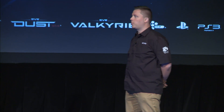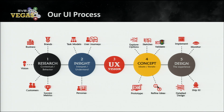When we're doing UI, we have a process. We start with research, where we get all the information we need to base our decisions: what are the customers asking, what are the metrics telling us, what is the overall vision, what does the business want, and what is the brand asking us to do? We take all that data and put together user experience methodologies — we map the journey of the user, create task models, and also create personas. This is a tricky subject for EVE because there are so many play styles, but when you're doing a certain thing with a certain UI, you're always doing it in a certain way, so we can always map that.